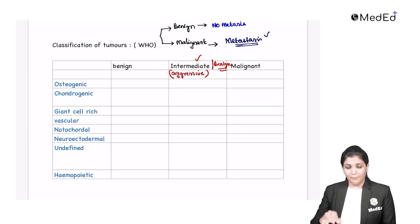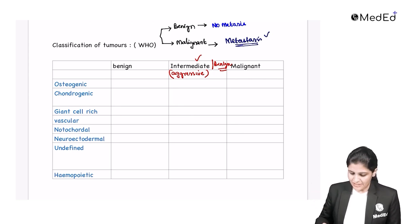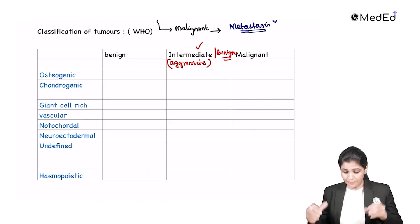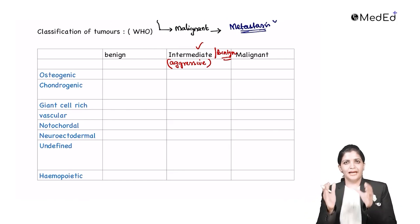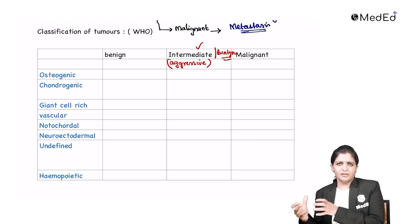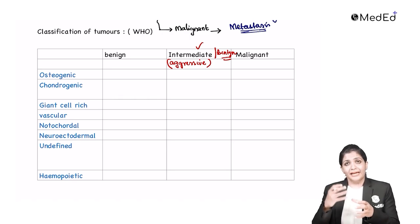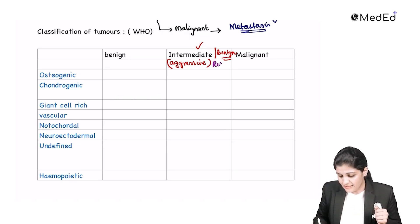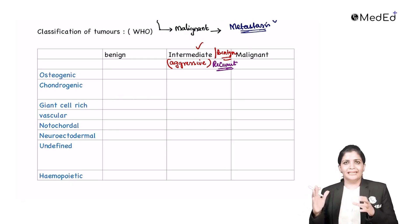Once you complete this table, you will understand the important concepts regarding bone tumors. Let us fill up this tabular format. Benign has all features of a benign tumor with no metastasis; malignant has metastasis; and intermediate between these two is called benign aggressive. The aggressiveness is characterized by its recurrence.